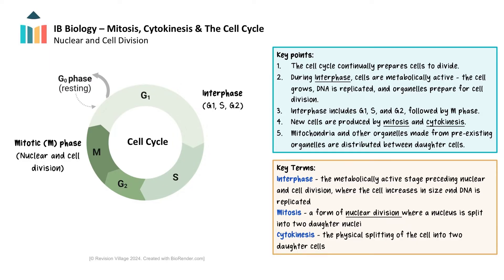Instead, cells in G0 are in a state of quiescence, performing their normal functions without progressing through the cell cycle. Cells in G0 phase are metabolically active but do not undergo mitosis or cytokinesis. This phase can be temporary or long-term, depending on the cell type and conditions.